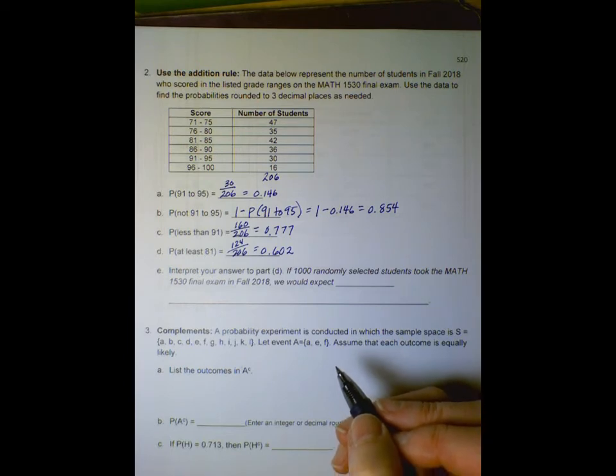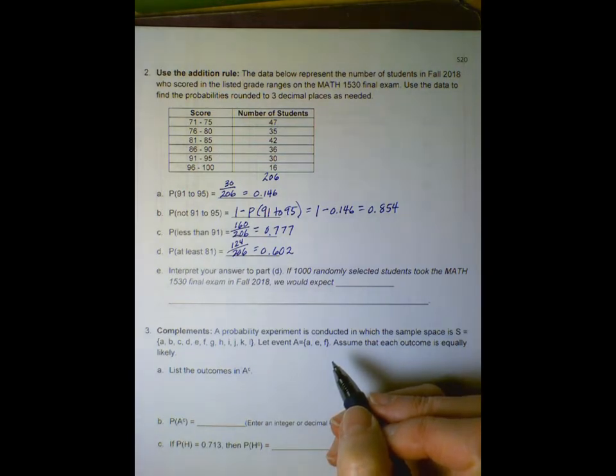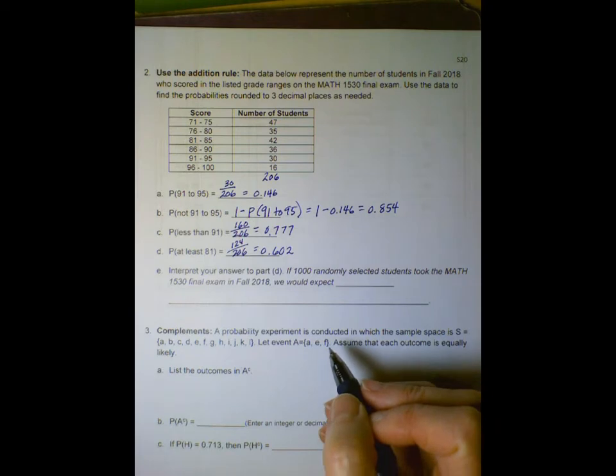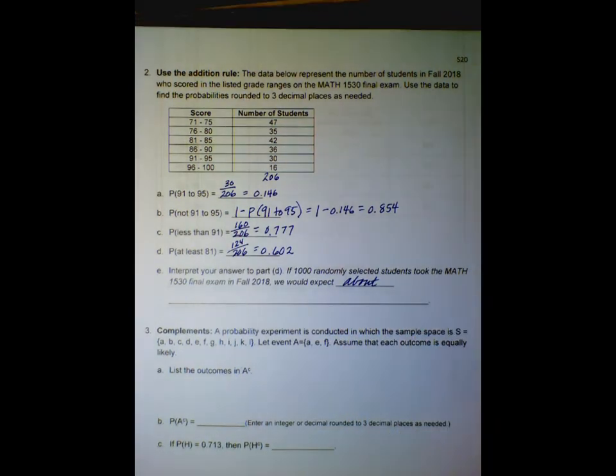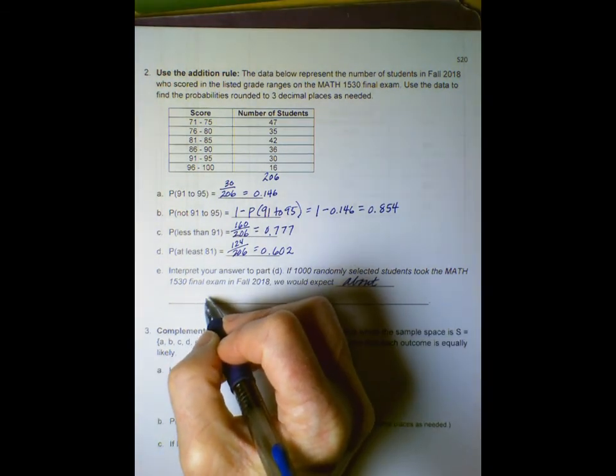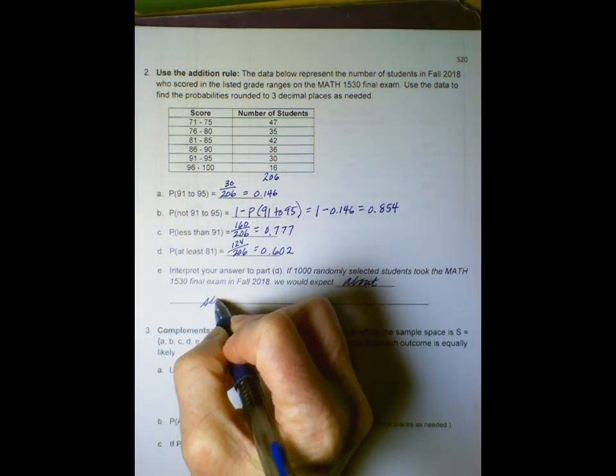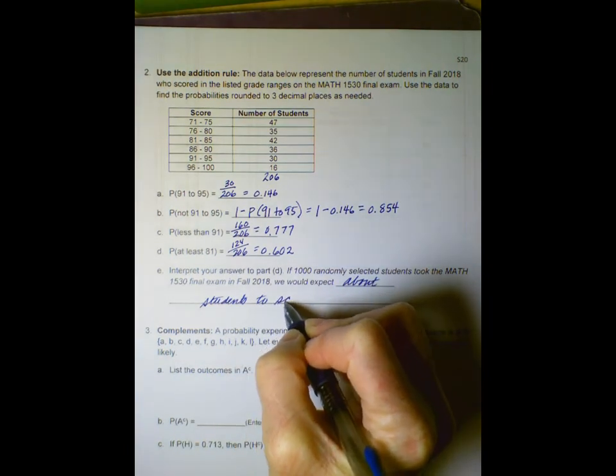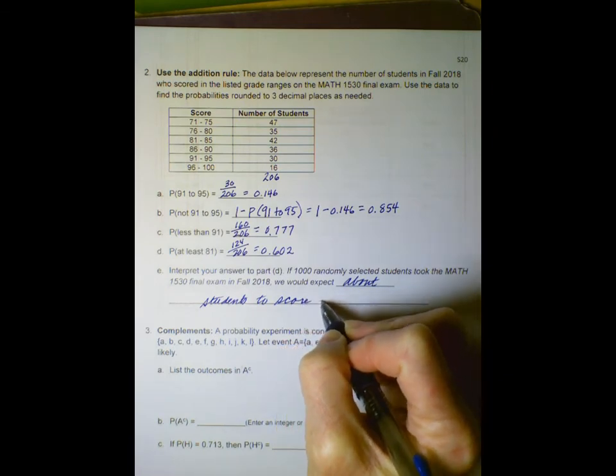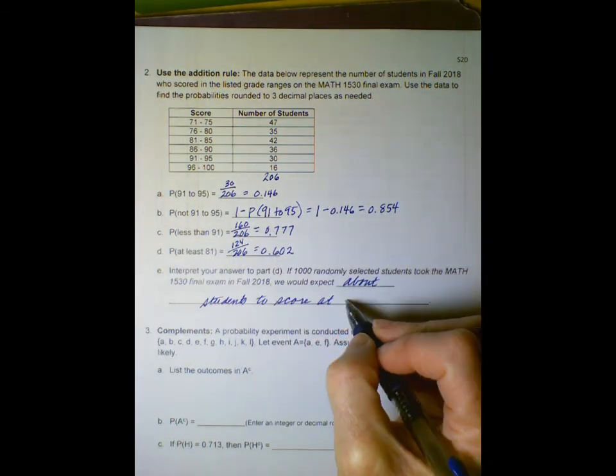Finally, in part e, we're to interpret our answer to part d. If 1000 randomly selected students took the MATH 1530 final exam in Fall 2018, we would expect about how many students to score at least 81?